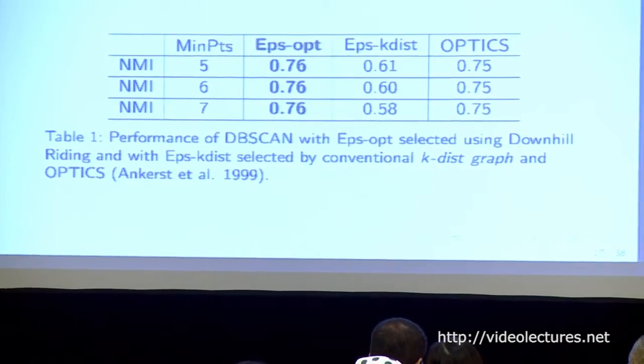There are two tuning parameters in DBSCAN: epsilon and the number of points (minPts). Epsilon is more important in controlling clustering performance. The real benchmark data we use is the Iris dataset — 150 samples with four variables for three clusters. The first column shows different values of minPts. The second column is the epsilon selected by our downhill riding procedure. The third column is the epsilon selected by the k-distance graph, the original method proposed by the authors. The third method is OPTICS, an improved version of DBSCAN. Our DR procedure's selected epsilon outperforms other selection methods for different values of minPts. We also have a simulation study in the paper showing that tuning parameters selected by the DR procedure help the clustering algorithm achieve better performance.